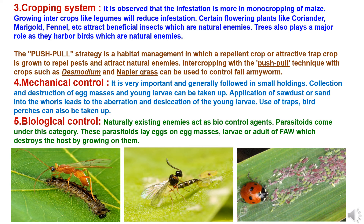The third method is cropping system management. Infestation is observed to be higher in monocropping of maize. Growing intercrops like legumes will reduce infestation. Certain flowering plants like coriander, marigold, and fennel attract beneficial insects which are natural enemies. Trees also play a major role as they harbor birds which are natural enemies. The push-pull strategy is a habitat management approach in which a repellent crop or attractive trap crop is grown to repel pests and attract natural enemies. Intercropping using the push-pull technique with crops such as Desmodium and Napier grass can be used to control Fall Army Worm.